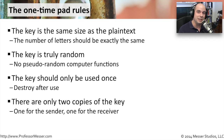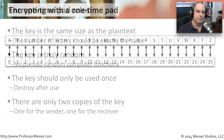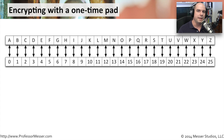Those are the only two people who would ever have a copy of this key. If somebody were to get a copy of the key somewhere in the middle, they would absolutely be able to decrypt the message. So if you follow these rules, you can be assured that your one-time pad communication will not be seen by anyone else. The process of encrypting with a one-time pad is relatively simple — we'll step through it here, and the same steps in reverse are used to decrypt.